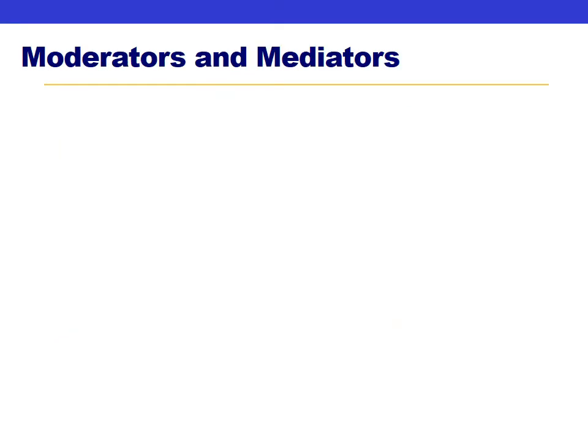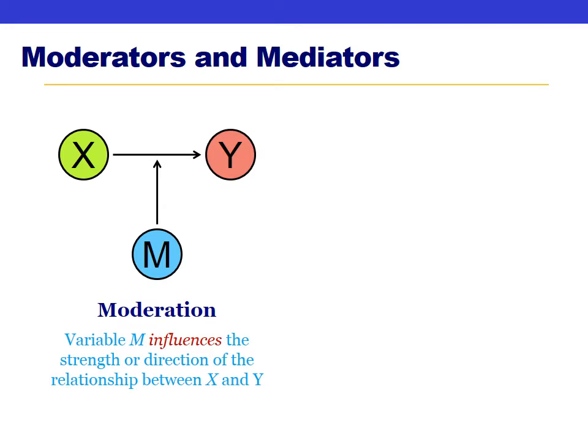For the rest of the semester we'll be talking about moderation and mediation, starting today with moderation. As a reminder, moderation describes situations where a third variable — a moderator M — dictates the strength, direction, or existence of the relationship between X and Y. So if X and Y are related only for some people but not others, we say M moderates that relationship. Another way to say that is there is an interaction between X and M in how they predict Y.